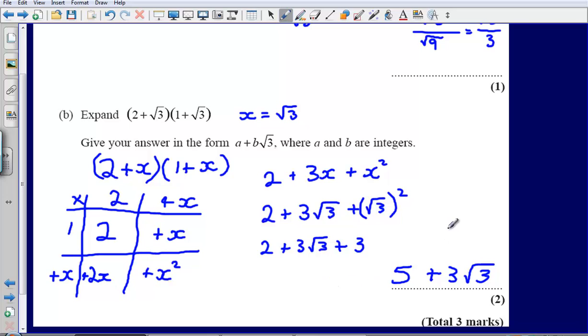So I could also say if I wanted to that a is equal to 5, and that b is 3. Just saying that that 5 there represents my a, and then how many root 3's I've got, I've still got 3 of those, so that represents my b.